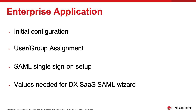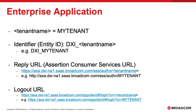In the Azure AD enterprise application configuration, we're going to assign users and groups to the enterprise application, cover the steps needed to configure SAML single sign-on with DX SaaS, and take note of the values we'll need later in the DX SaaS SAML configuration wizard. Before we can configure the enterprise application, we'll need some information, which is given to you at the end of the DX SaaS SAML configuration wizard. You could enter bogus values until you get to the end of the wizard, or you can use this cheat sheet to infer it.